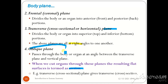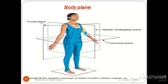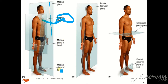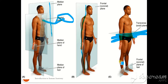The transverse plane gives a transverse section, and the oblique plane gives an oblique section. Looking at the body: this is the frontal plane, this is the median plane, and this is the transverse section plane. The sagittal plane is also called the median plane. The frontal or coronal plane divides the back and front. The transverse or axial plane divides superior and inferior.